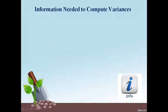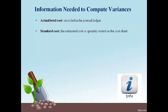The accountant must gather a lot of information before computing and analyzing variances. Actual costs are recorded in the general ledger. Standards are the estimated cost and quantity amounts stated on the cost sheet.